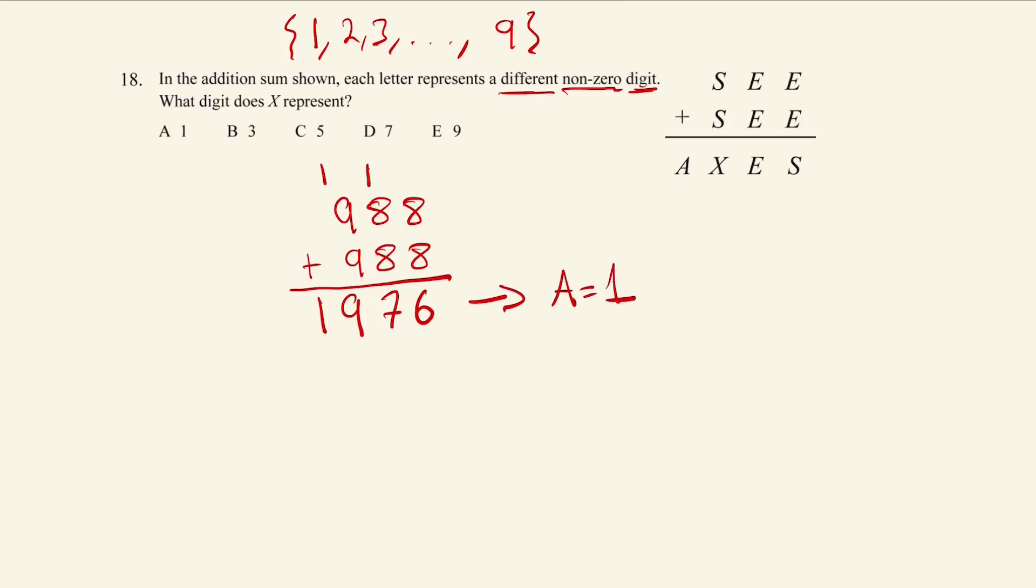If we look at the right most column, so this is E plus E is S. And we look at the column next to it, this now says E plus E equals E. Well, how does this make any sense?